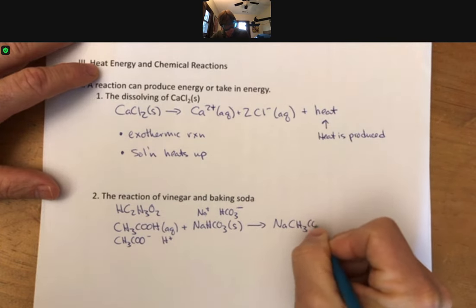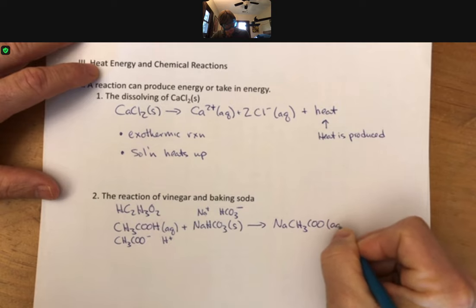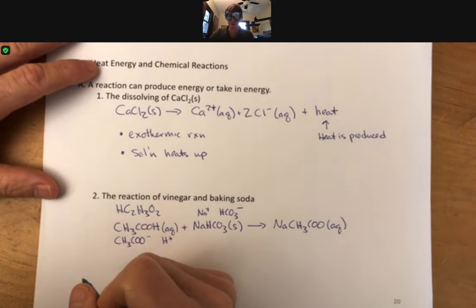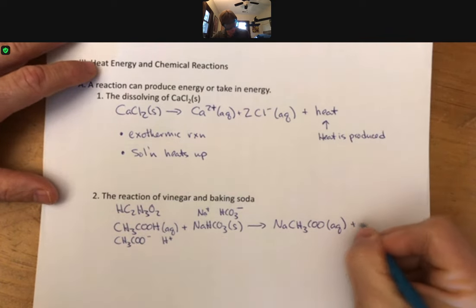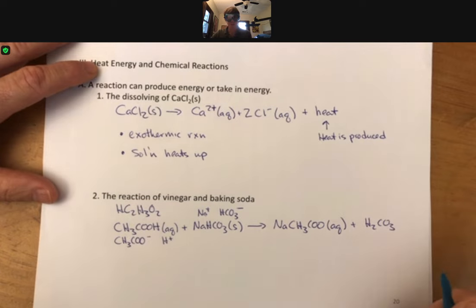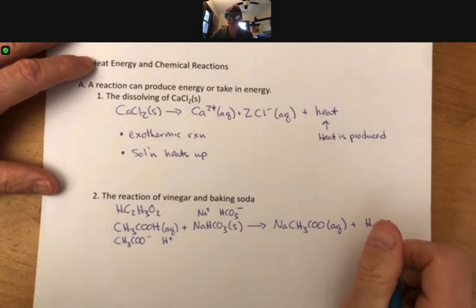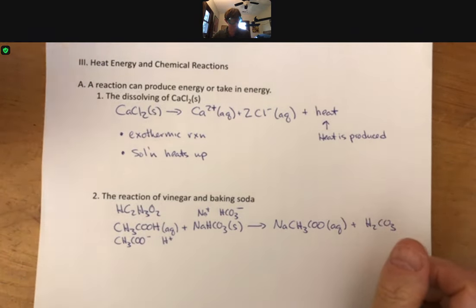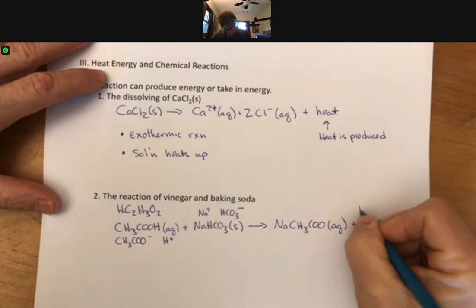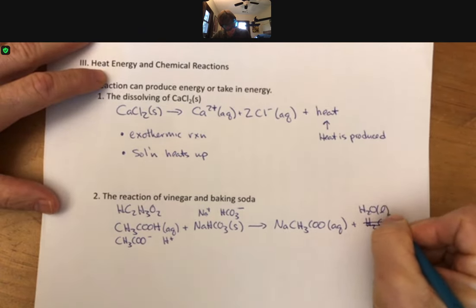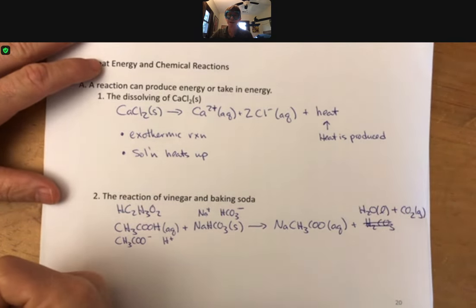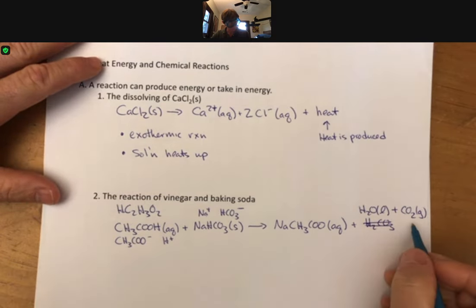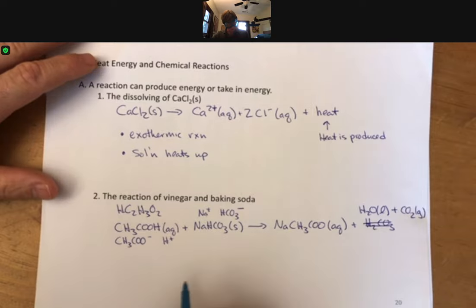We pair the cations and anions to make sodium acetate, which is soluble and therefore aqueous, plus H2CO3, which is carbonic acid. We think back to our double replacement gas-evolving reactions and immediately replace carbonic acid with water and carbon dioxide. So this will be gas. This is our reaction here.